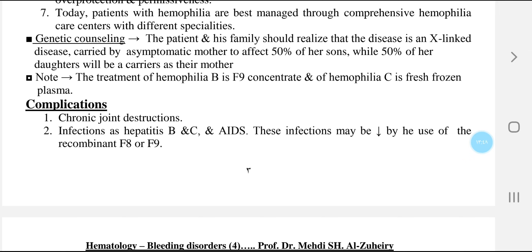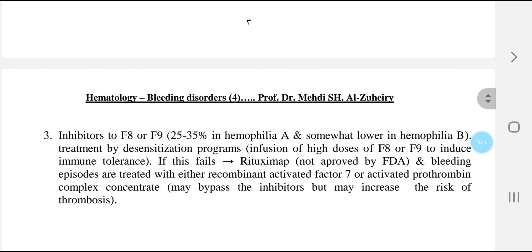Complications of hemophilia: first, chronic joint destruction; second, infections such as hepatitis B, C, and HIV — these may be decreased by use of recombinant factor 8 or factor 9. Third, inhibitors to factor 8 or factor 9 are found in 25 to 35% of hemophilia A patients and somewhat lower in hemophilia B. Treatment is by a desensitization program using high-dose infusions of factor 8 or factor 9 to induce immune tolerance. If this fails, rituximab (not approved by FDA) may be used. Bleeding episodes are treated with either recombinant activated factor 7 or activated prothrombin complex concentrate, which may bypass the inhibitors but may increase the risk of thrombosis.